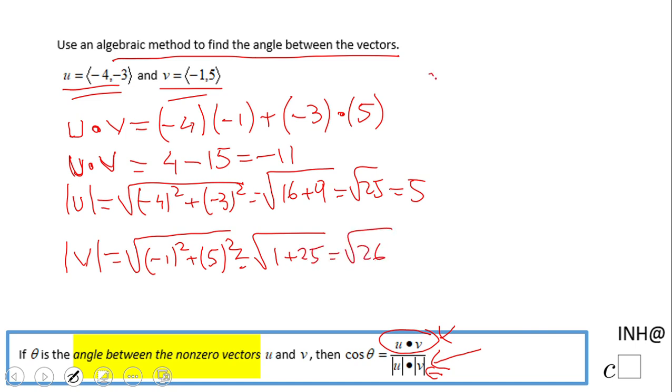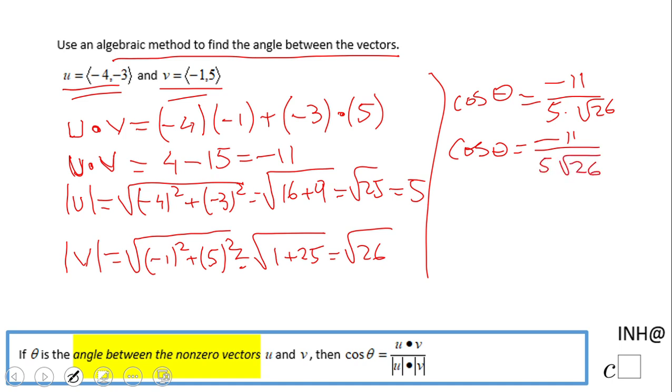Now we're gonna go to the formula. Cosine of theta equals u times v, the dot product negative 11, divided by the magnitude of u, 5, times the magnitude of v, square root of 26. So cosine of theta equals negative 11 over 5 square root of 26. I'm gonna take a calculator and use the inverse function of cosine.